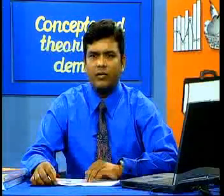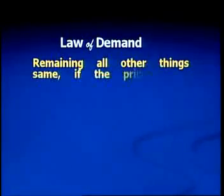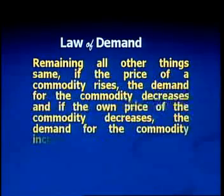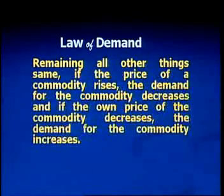Now if we keep all other things the same except the price of the commodity, we find that if the price of the commodity increases, the demand for the commodity decreases, and if the price decreases, the demand for the commodity increases. That means there is an inverse relationship between the price and quantity demanded, and this inverse relationship is called the law of demand. So the law of demand says: remaining all other things the same, if the price of the commodity rises the demand decreases, and if the price decreases the demand increases.